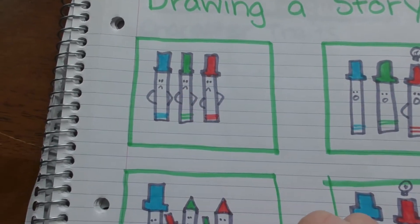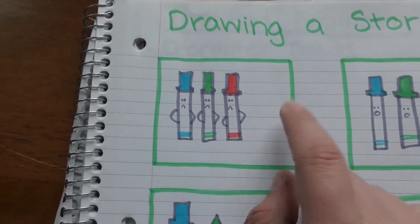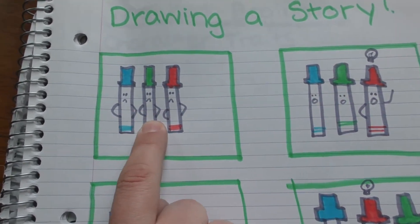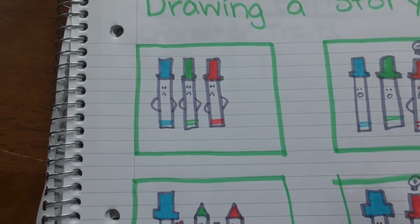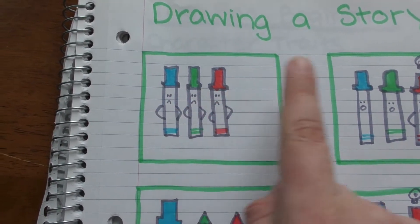I'm going to tell a story for you based on what I drew. Three marker friends - blue marker, green marker, and red marker - were unhappy with their outfits. You can see I made their faces sad because they are unhappy.